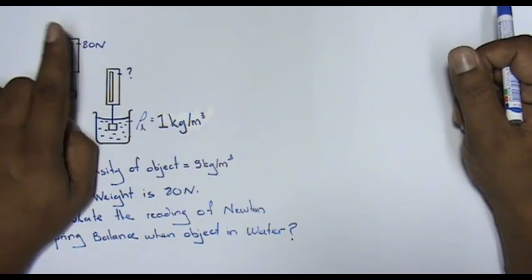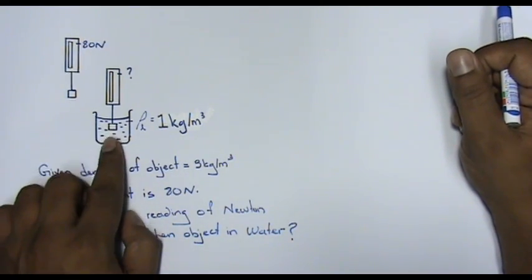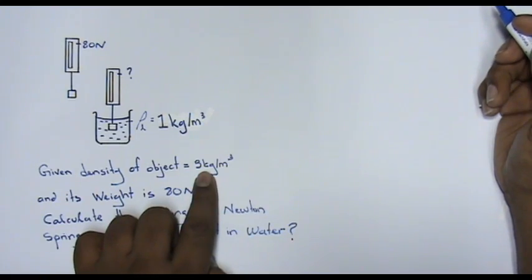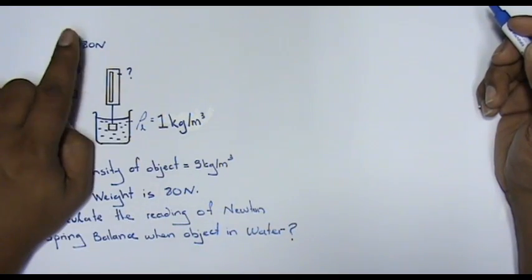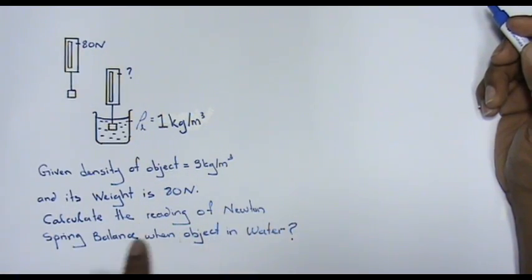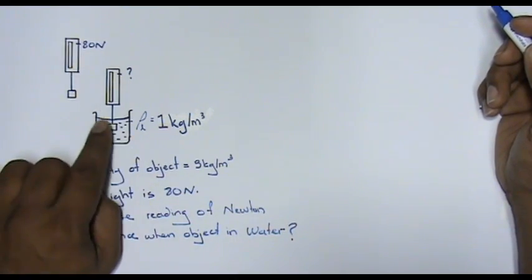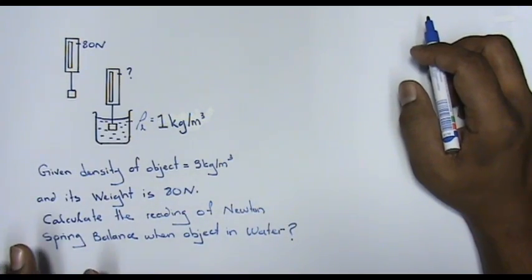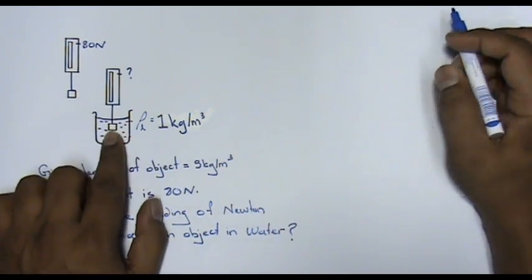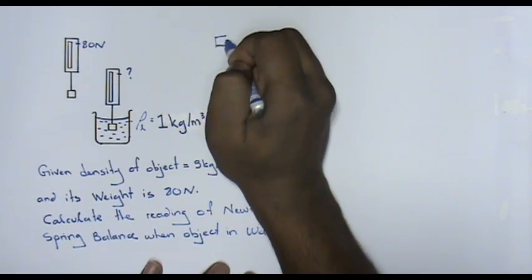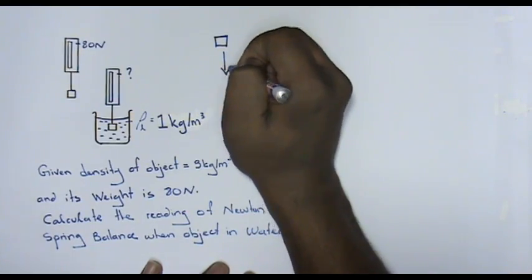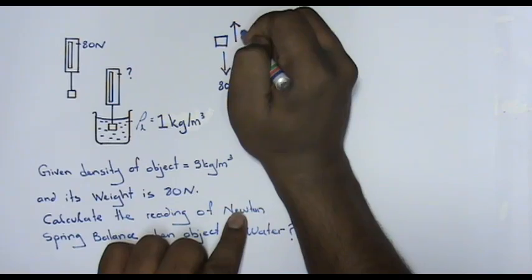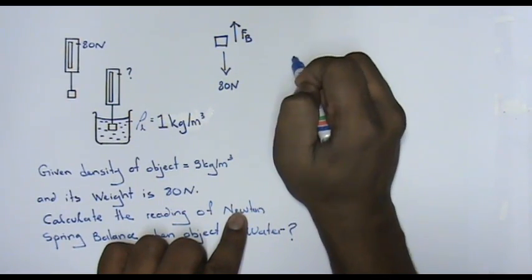Obviously it's going to be lower than 80, because there's a buoyant force pushing the object upward. Now let's go through the question. The density of the object is given as 3 kilograms per cubic meter, and the weight of the object is 80 Newtons. We need to calculate the reading of the Newton spring balance when the object is in water. To do that, we first need to find the buoyant force, since we already know the downward force is 80 Newtons but we don't know the upward buoyant force.